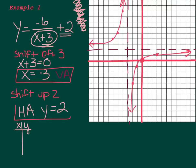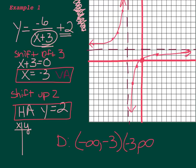We've got the most important parts: the vertical asymptote and the horizontal asymptote. If we were to give it a domain and range: the domain is negative infinity until it hits the asymptote at negative 3, then picks back up after negative 3 and goes on to infinity. The range is negative infinity, goes up until it hits the asymptote at 2, then picks up at 2 and goes on to infinity.